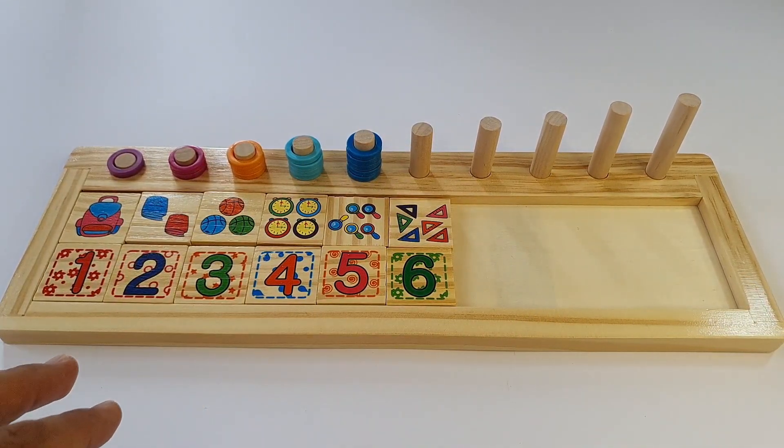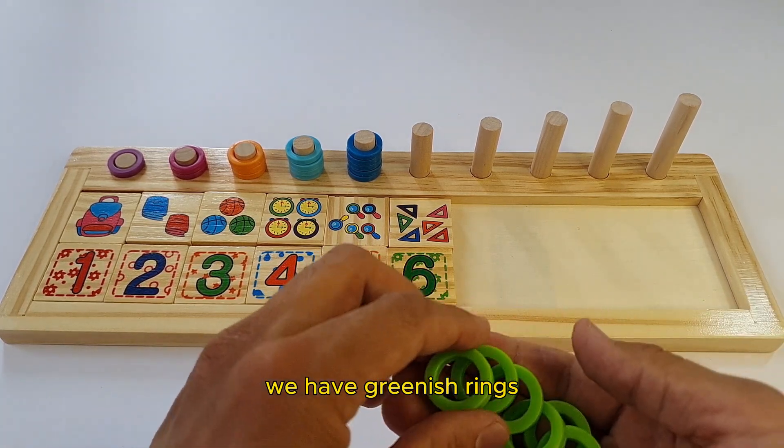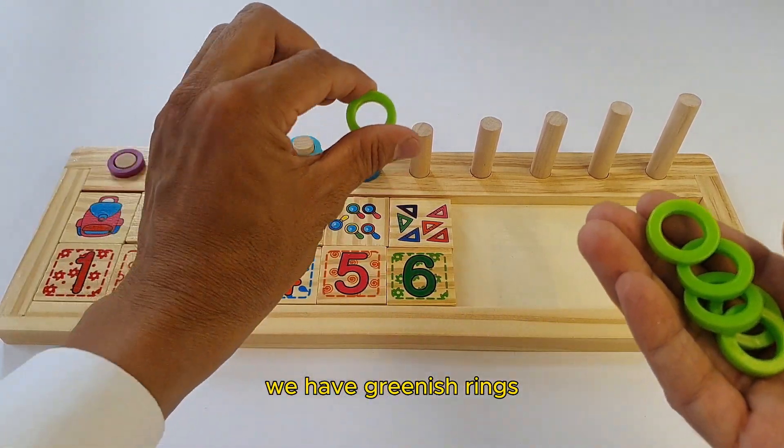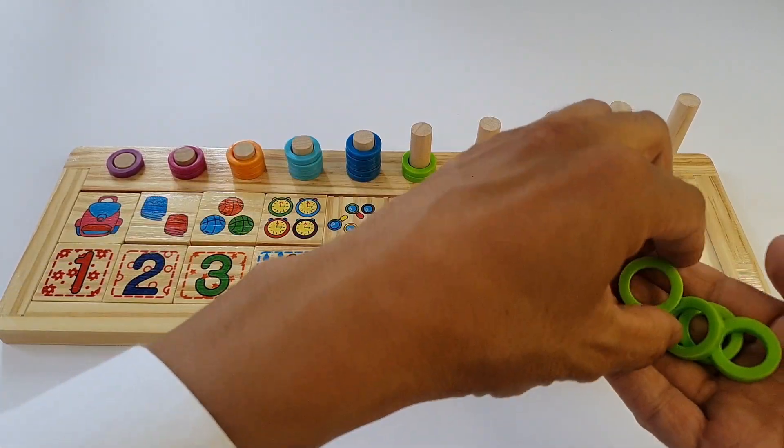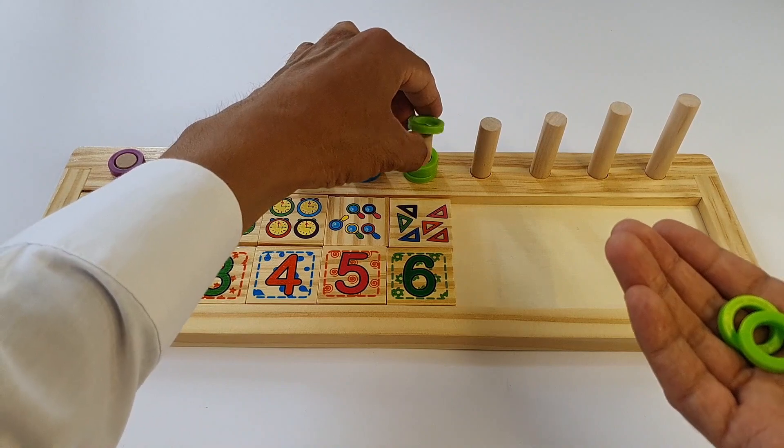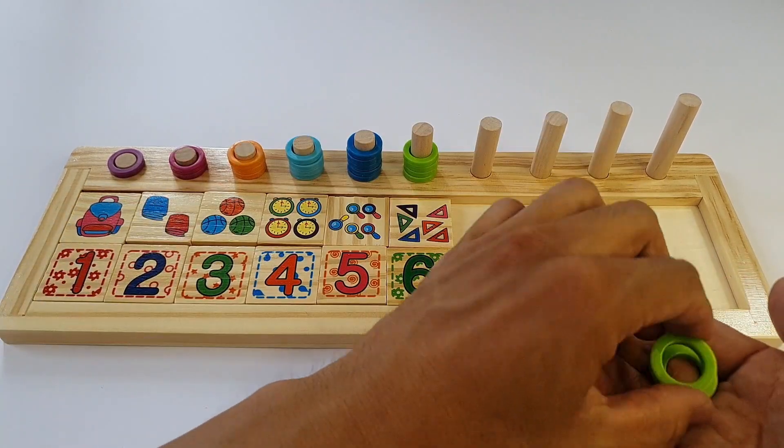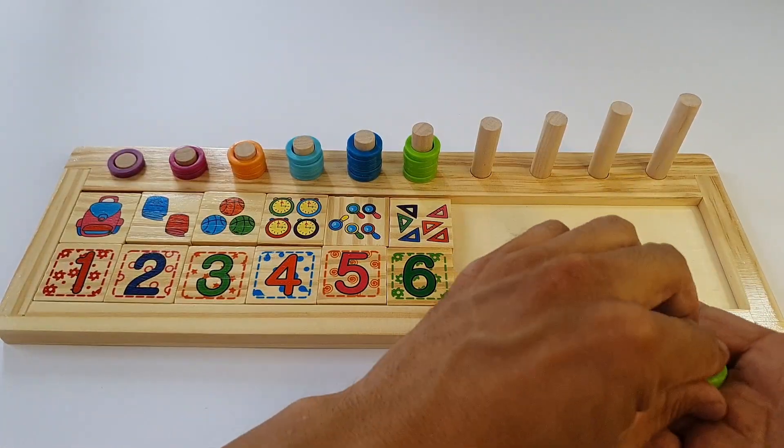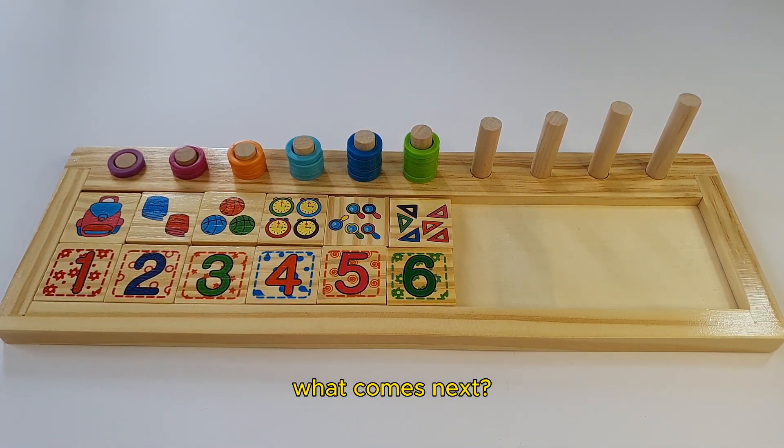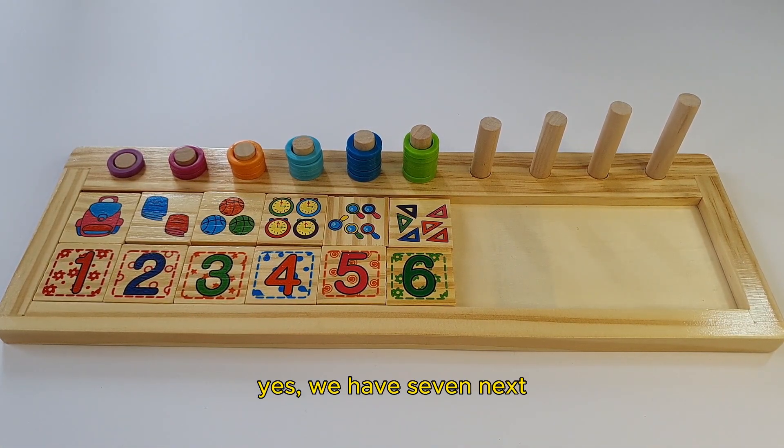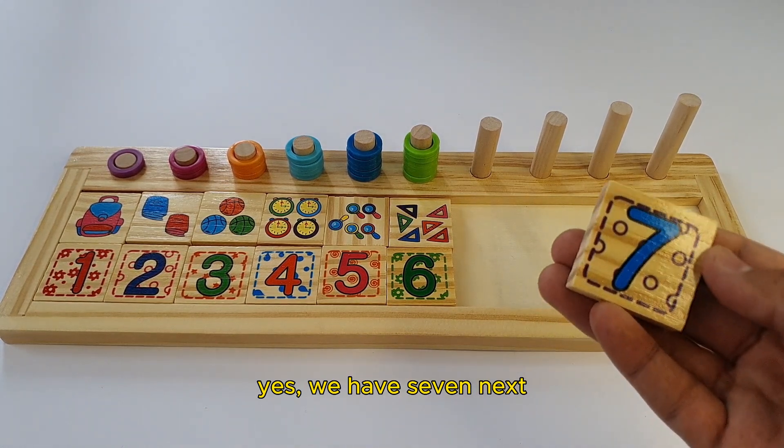Let us see. We have greenish rings. One, two, three, four, five, and six. What comes next? Yes. We have seven next.